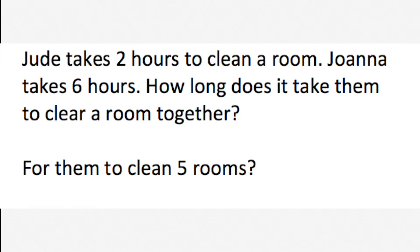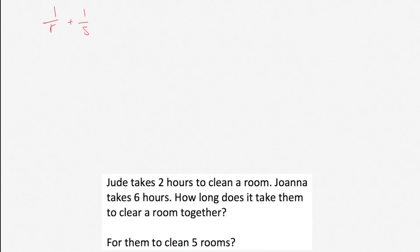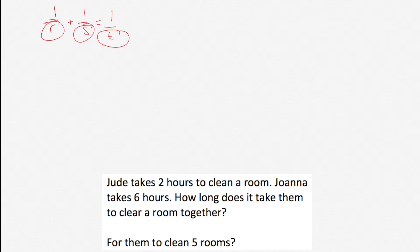Jude takes two hours to clean a room. Joanna takes six hours. How long does it take them to clean a room together? The way these work problems go is: we have one over R plus one over S equals one over T. The R is how long it takes the first person or entity or machine to do it, S is the second person or machine, and T is how long it takes them to do it together.